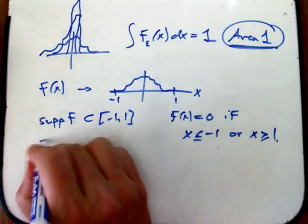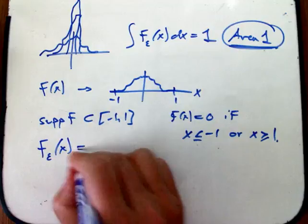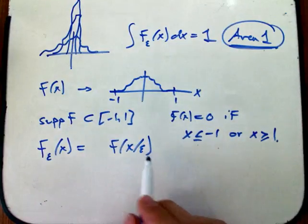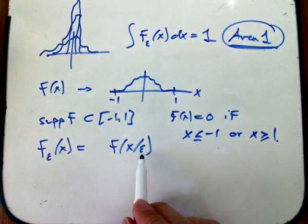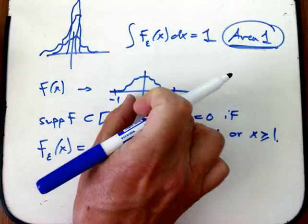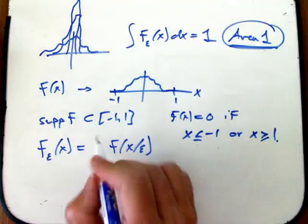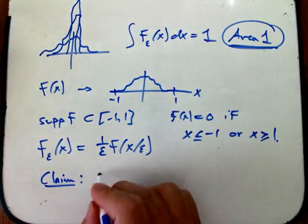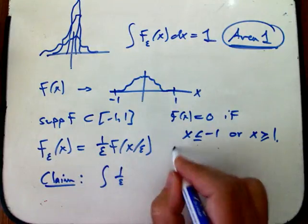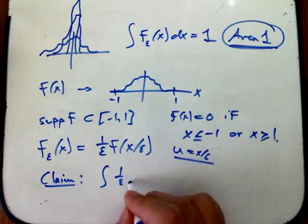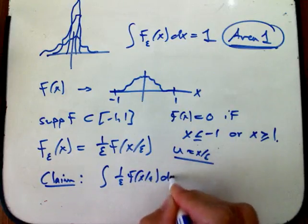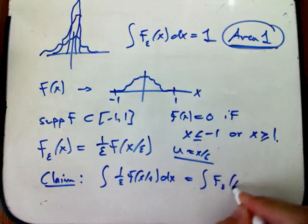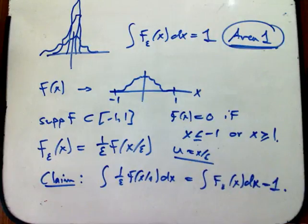And then we're going to define f_epsilon of x to be—we're going to shrink it so that this is going to be supported, it's pretty easy to show, that this is supported from minus epsilon to epsilon. So as epsilon goes to zero, that's going to shrink this in the width. But then we have to make it taller, and the claim, the first part that you're asked to prove, is a very simple change of variables—just u equals x over epsilon—shows you that this guy, integrated from minus infinity to infinity again, or in other words using the notation this guy, those are all equal to one.